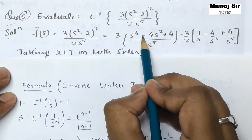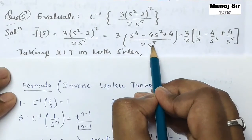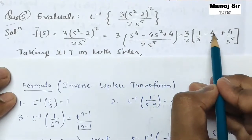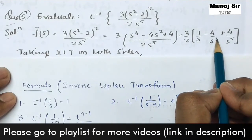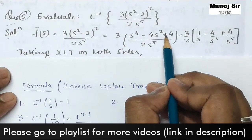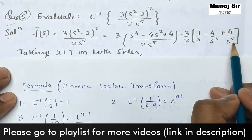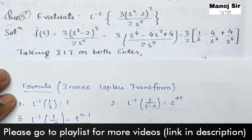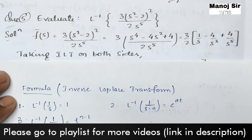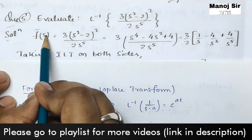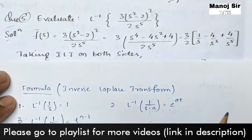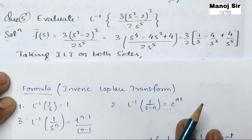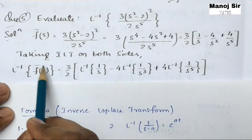Continuing the separation: minus 4s²/s⁵ simplifies to minus 4 times 1/s³, and finally plus 4/s⁵. So f̄(s) = (3/2)[1/s − 4/s³ + 4/s⁵]. Now we are going to apply the inverse Laplace transform on both sides.